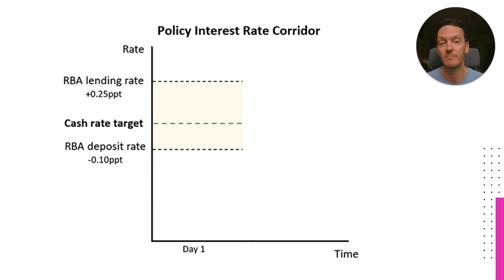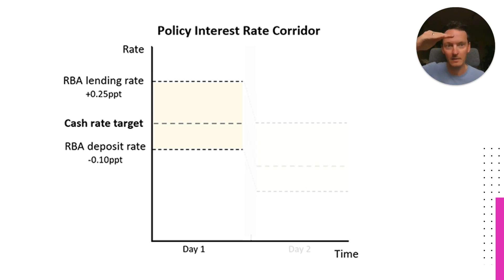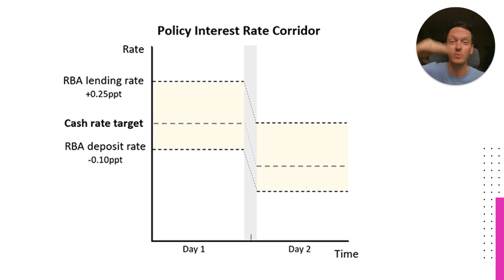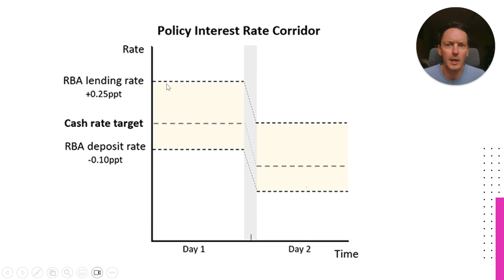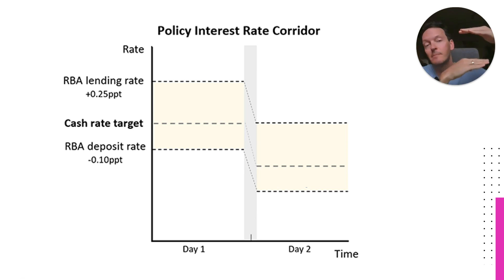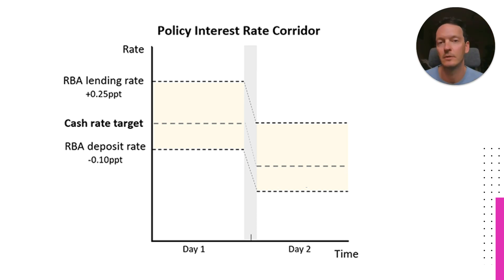So what happens when the Reserve Bank wants to change the cash rate, with the intent for banks to change their commercial interest rates? All they do is shuffle that cash rate target down or up, depending on which way they want to move the interest rate effect. In this instance, we've got a cash rate target movement down of 25 basis points. The whole corridor — the reason it's called a corridor is it's got two sides, a top and a bottom — shifts down 25 basis points above the new cash rate target and 10 basis points below it. They'll shuffle the corridor down to make the price of borrowing money cheaper and stimulate more economic activity.